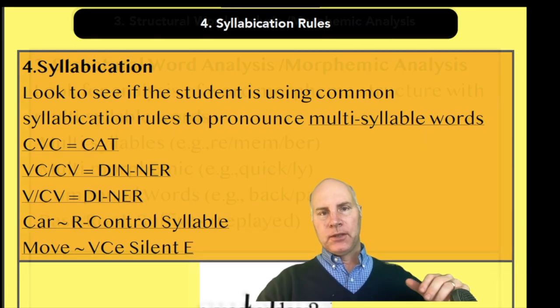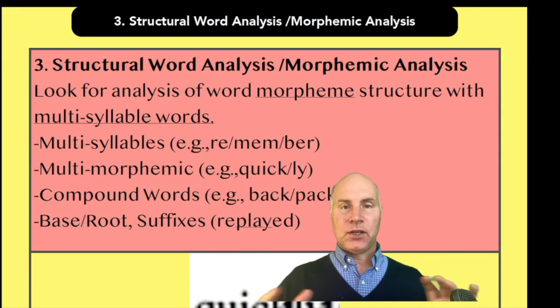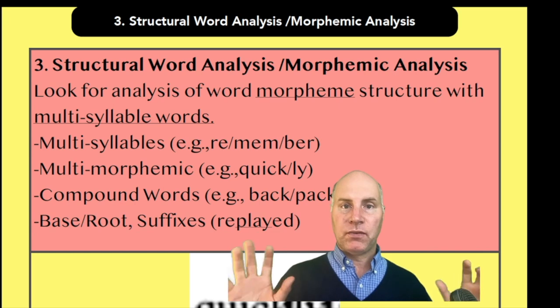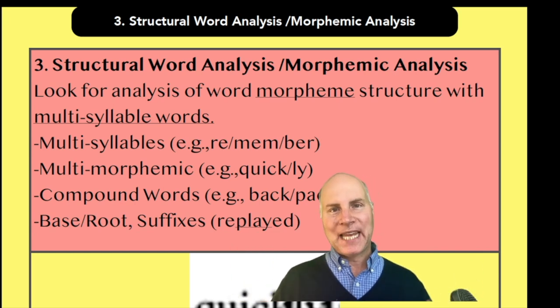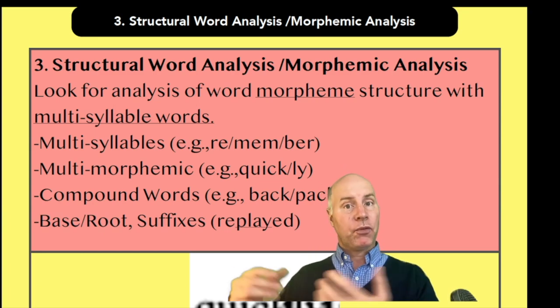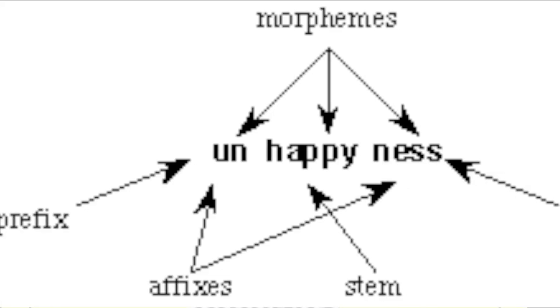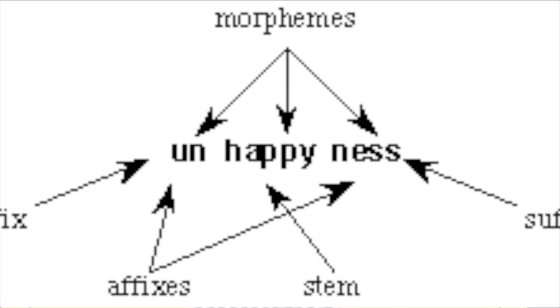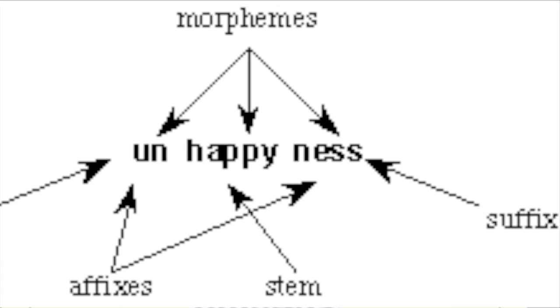So when we do structural word analysis, it's about looking at the parts of a word and analyzing those parts and looking at the parts that carry meaning. And we call those parts of a word that carry meaning morphemes. So sometimes you might hear structural word analysis, other times you might hear morphemic analysis. Basically, it's when we look at a multi-syllable word and we look at the parts of a word that carry meaning.